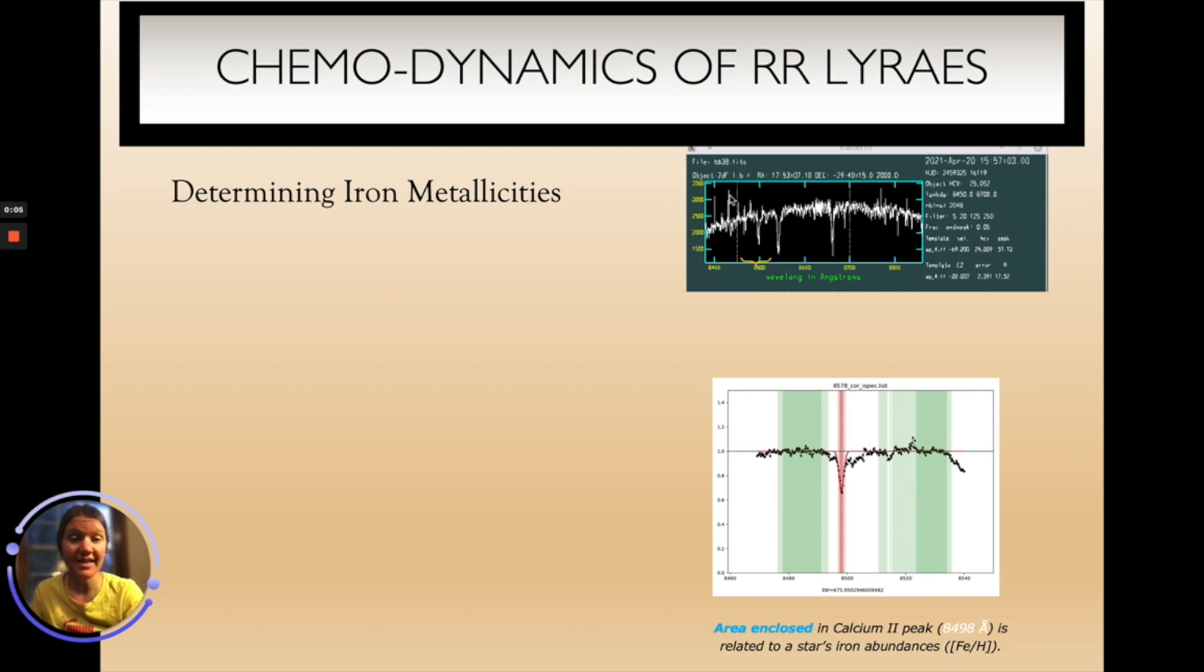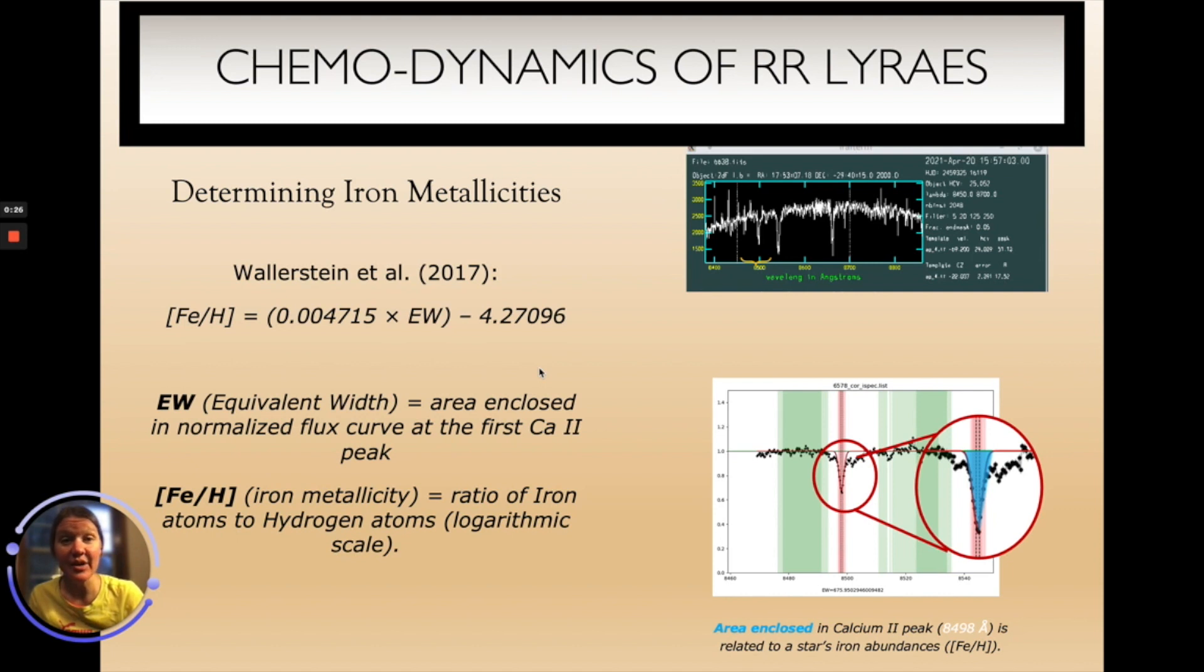Here is an example spectra from the AAT. You can see the calcium triplet lines one, two, three. To find Fe/H abundances we used the first calcium triplet line which is zoomed in here and we measured the equivalent width of that first iron line. It was first shown by George Wallerstein that there is a relation between the equivalent width of the first calcium triplet line and that of the RR Lyrae star's Fe/H. Recently a new calibration calibrating calcium triplet equivalent width to Fe/H was carried out by Zinn and Prudel, and we use Prudel's new relation to determine FeH metallicities of our stars.